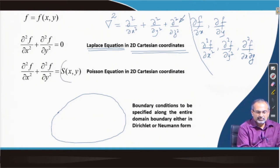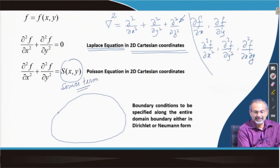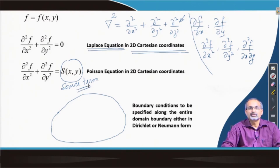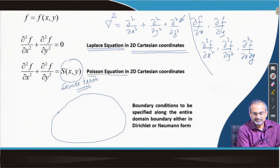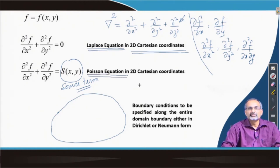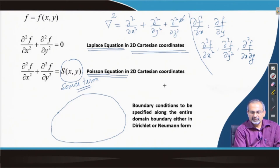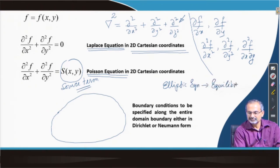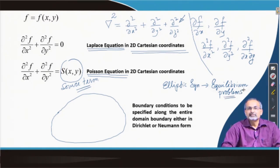If you have a source term on the right hand side of the equation — represented by the function capital S, which in general can depend on the spatial location as a function of both x and y — then we have the Poisson equation, again represented in 2D Cartesian coordinates. Elliptic partial differential equations fall in the category of equilibrium problems, and steady state heat conduction happens to be one such equilibrium problem.